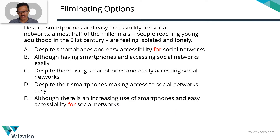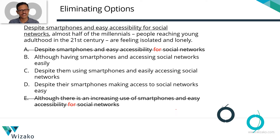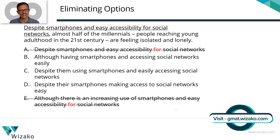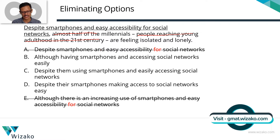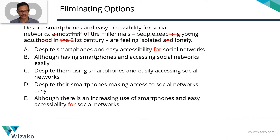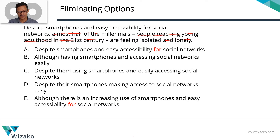Look at B: 'Although having smartphones and accessing social networks easily.' Let's remove what's not needed to isolate the issue. Stripping down: 'Although having smartphones and accessing social networks easily, millennials are feeling isolated.' The phrase 'although having' is creating trouble. Let's try converting it from a progressive form to a simple present or present perfect to see if it makes sense.